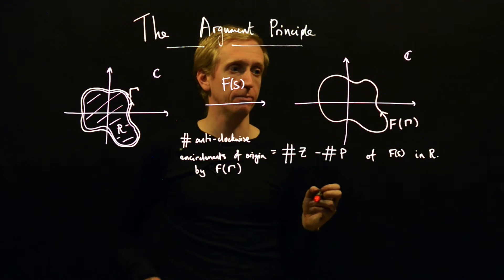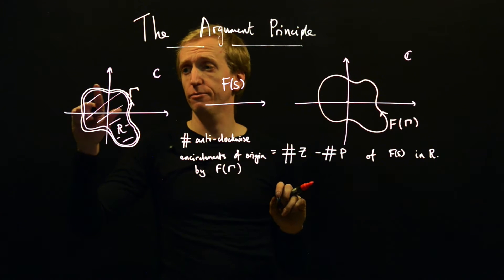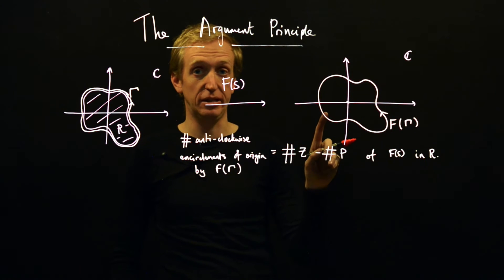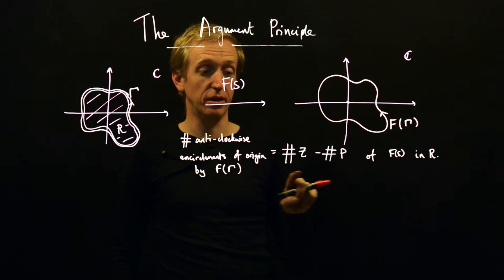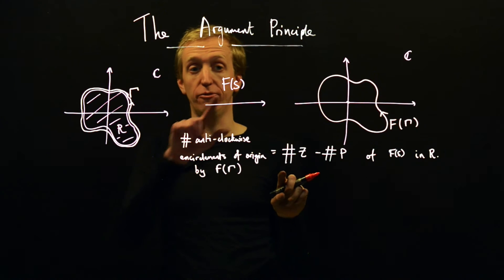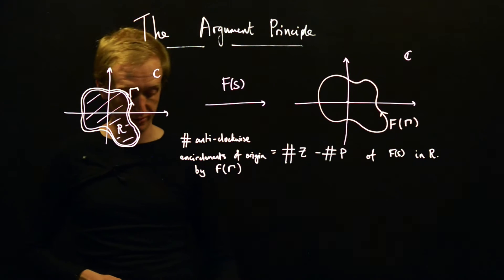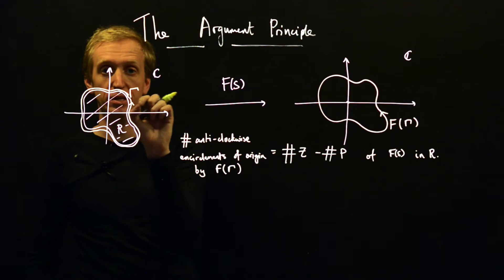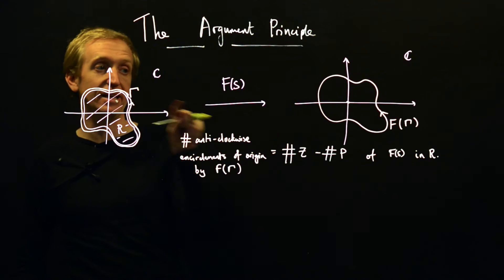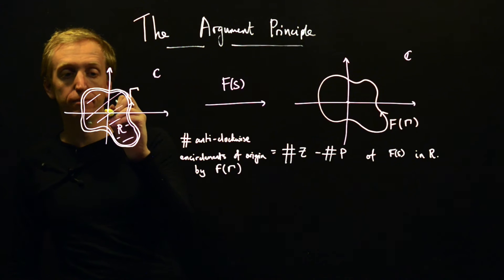Let's unpack that. We have a contour going in the anti-clockwise direction and we got out another contour that encircles the origin in the anti-clockwise direction one time. From the argument principle, this tells us we must have one more zero than pole of f of s in region R. So it's possible our function has exactly one zero in R. Or we could have two zeros, but if we have two zeros then there must be a pole. Zeros are typically denoted with circles and poles with crosses in the complex plane.